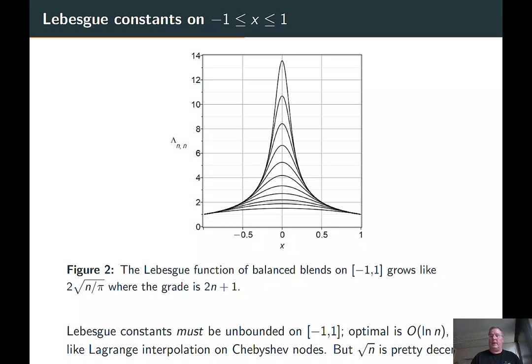The next part is, okay, we have good backward error. What about the forward error that results from that backward error? One way to look at that is to use Lebesgue constants.